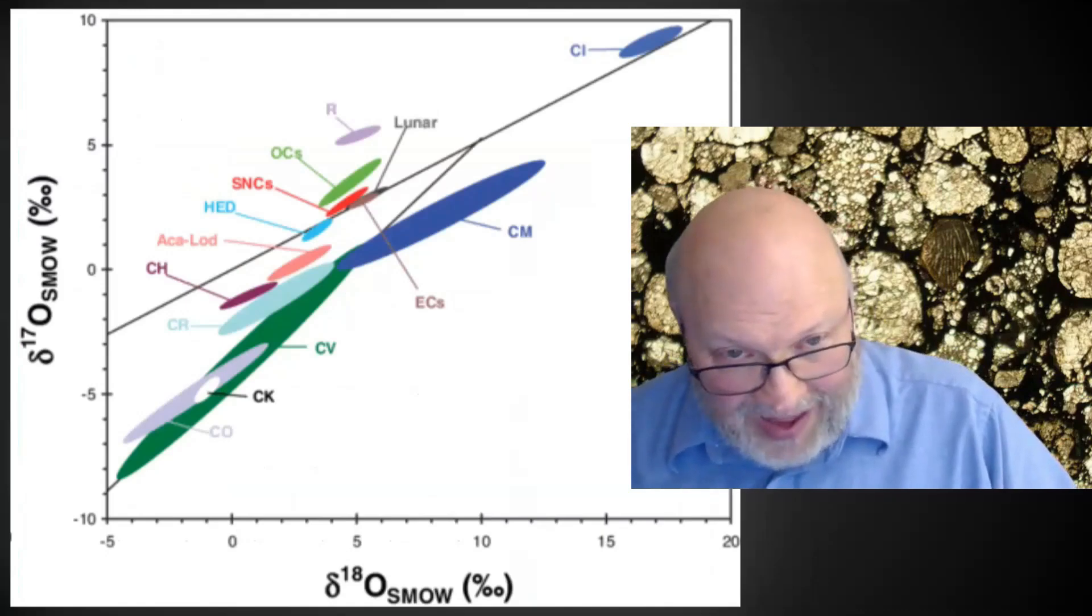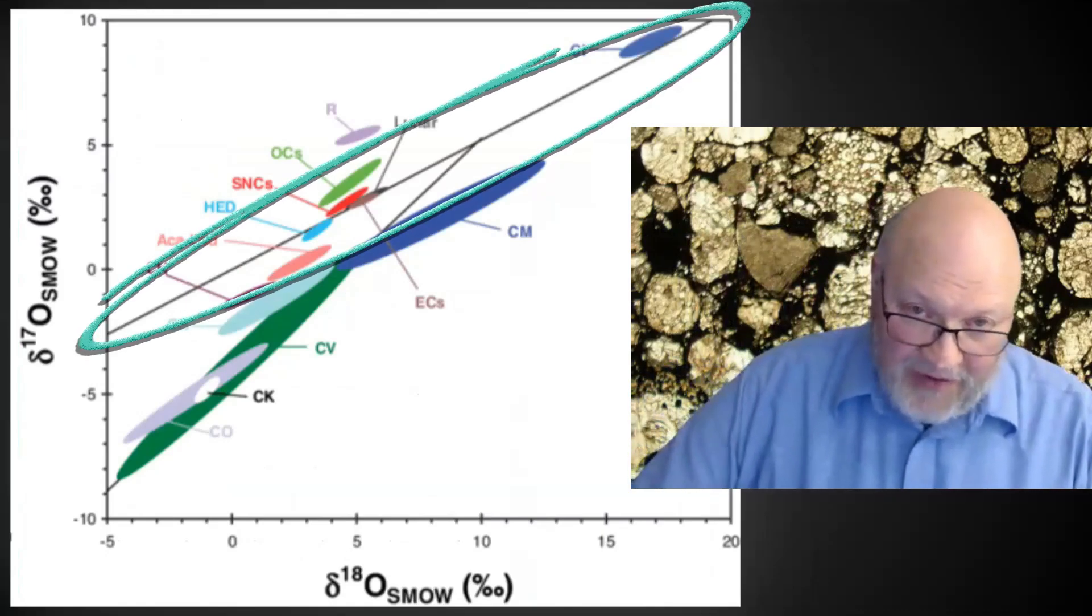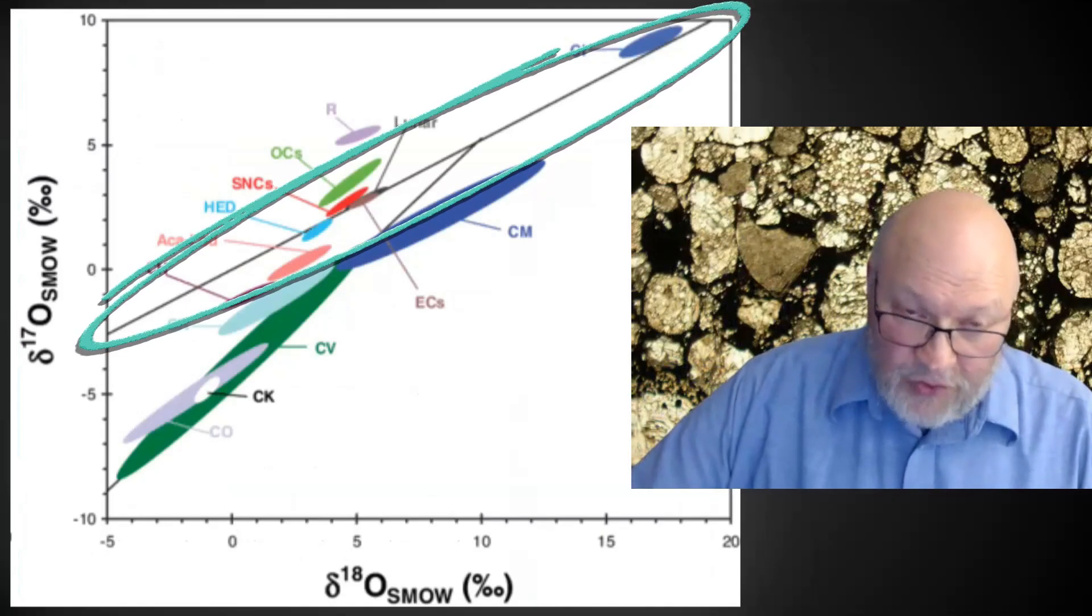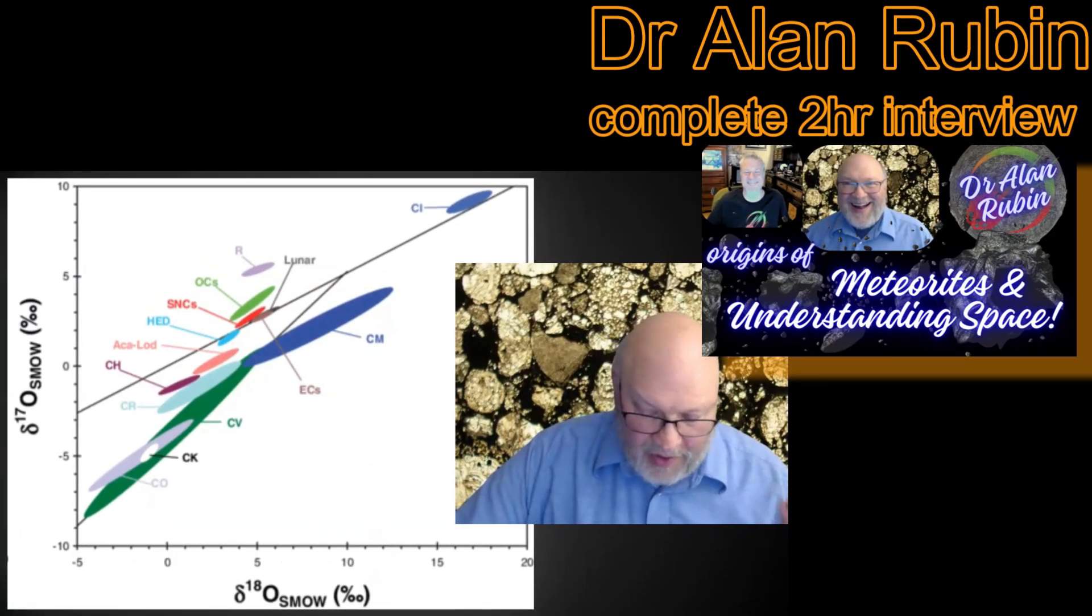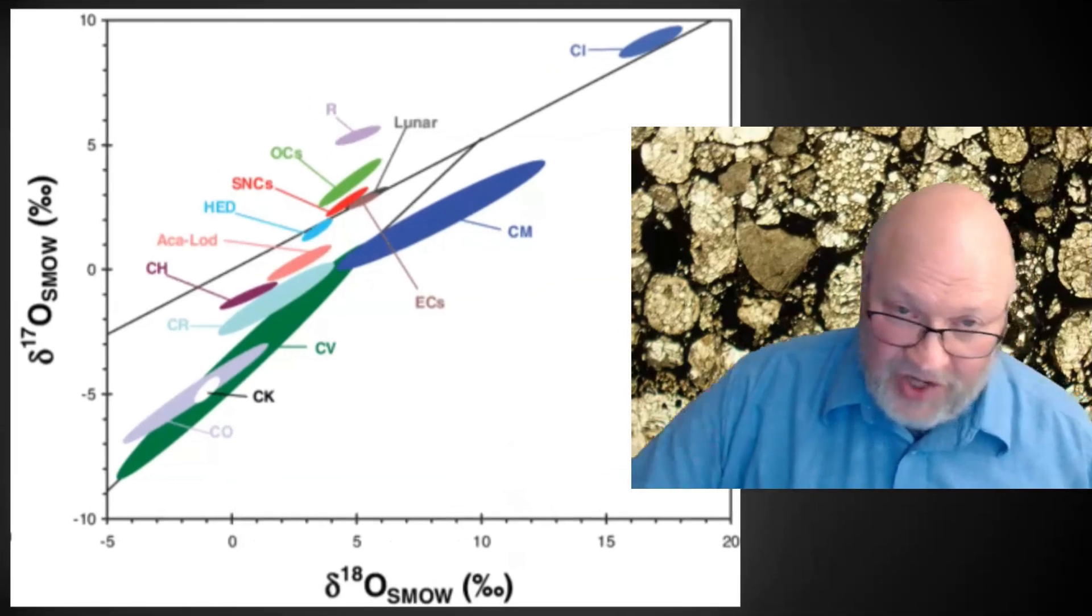And the big black line going at a 45-degree angle is the terrestrial fractionation line. All the samples on Earth, whether they're humans or petunias or rocks or the air or seawater, fall along this line, the TFL or terrestrial fractionation line.